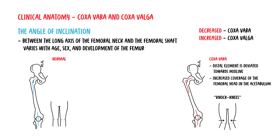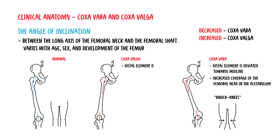The term valga is used when the distal element deviates away from the midline, so people will have what's called bow legs, where the knees are quite separated.